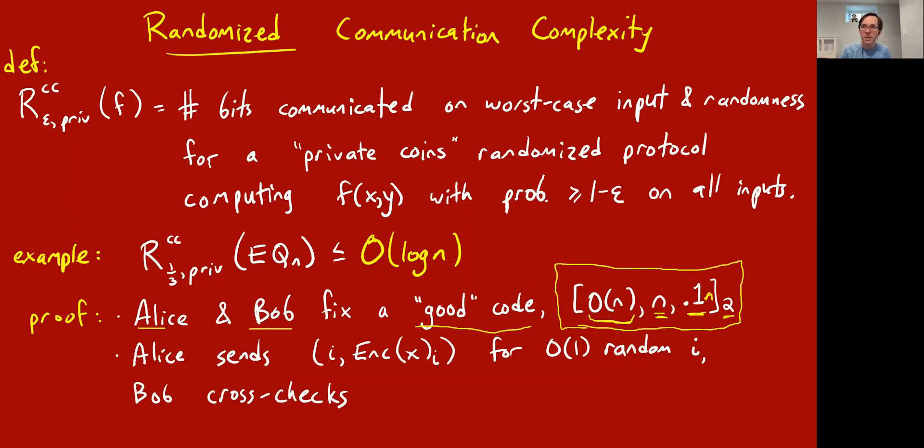You've sort of amplified it so that they disagree not just in maybe one position but at least 10 percent of all positions. Then you're in great shape because Alice can now just pick a few, like constantly many random positions in her encoded string, send these positions i over to Bob together with the ith bit of her encoded string, and Bob checks whether they match up with the appropriate bits of his encoded string, encoding of y. Since it'll always match up perfectly if equality is true, if x equals y, if x differs from y then the encodings will differ on at least 10 percent of positions. So if Alice picks like 10 or 20 positions, the probability they'll all accidentally agree is going to be smaller than the target error of one third.